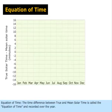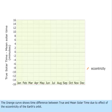Equation of Time: The time difference between true and mean solar time is called the Equation of Time, and recorded over the year. The orange curve shows time difference between true and mean solar time due to effect of the eccentricity of the Earth's orbit.